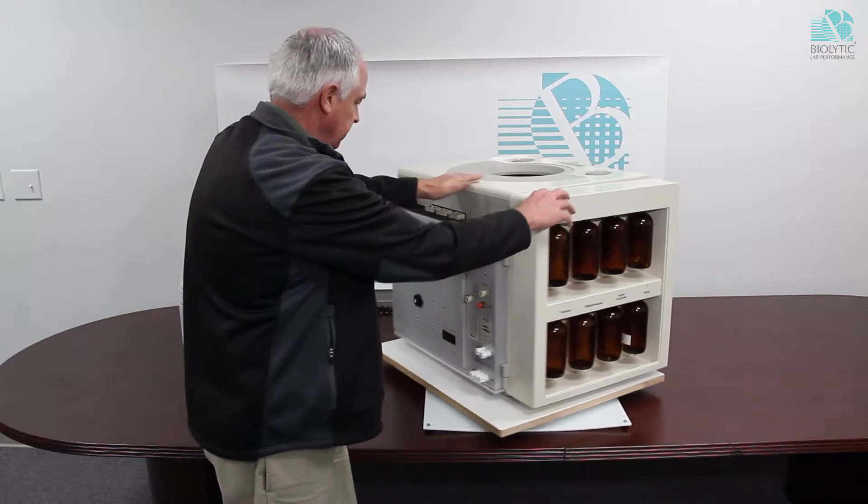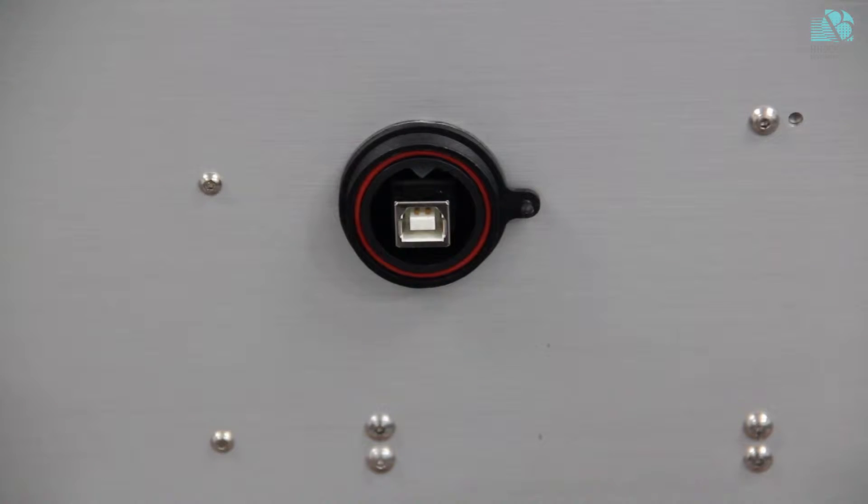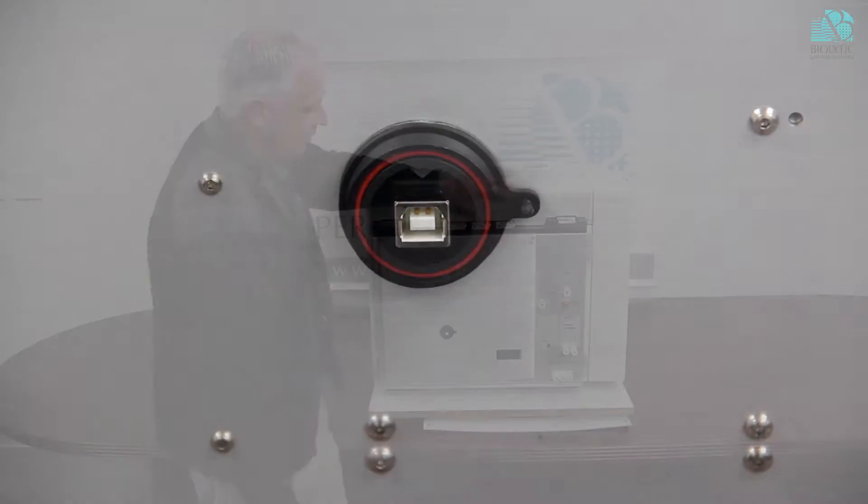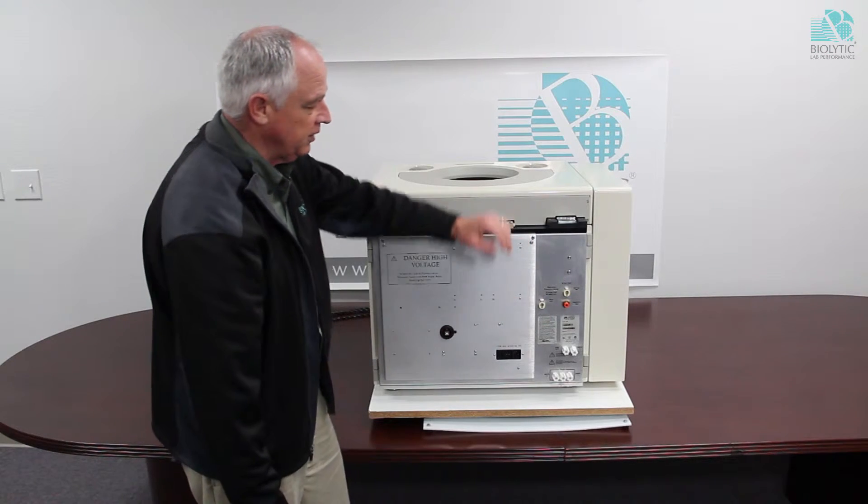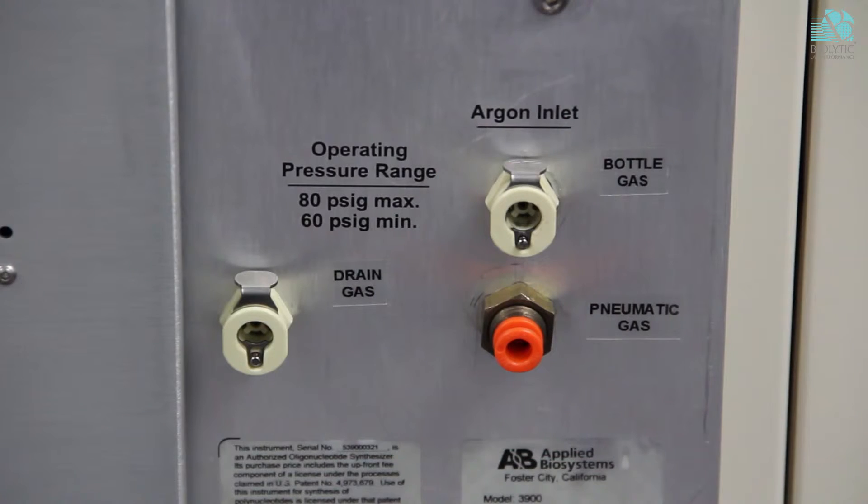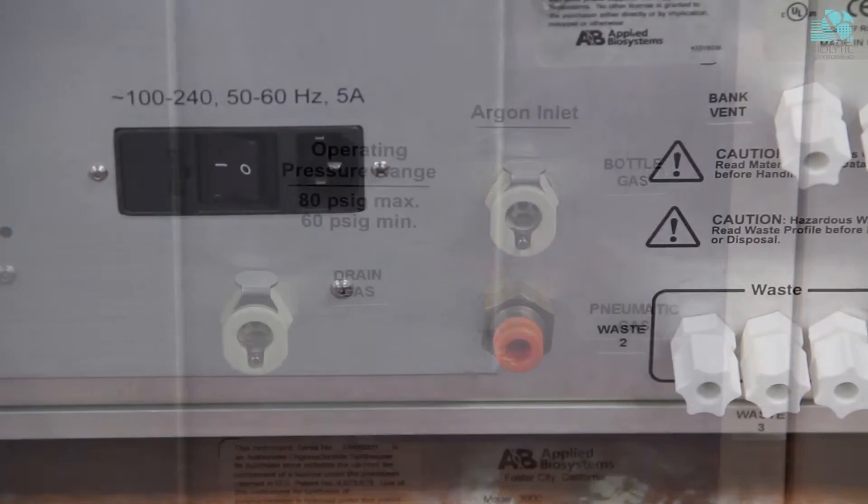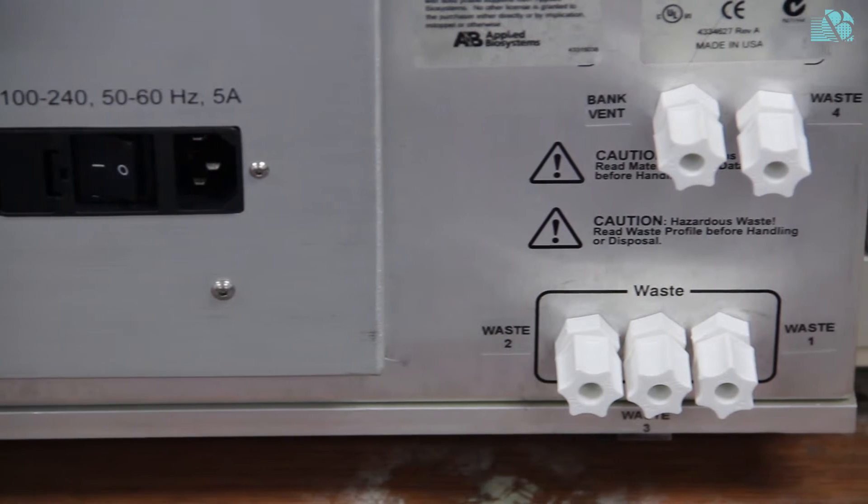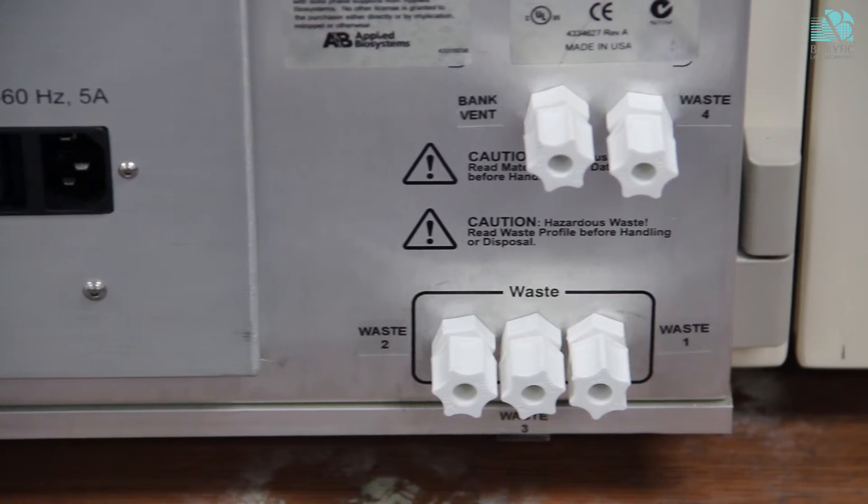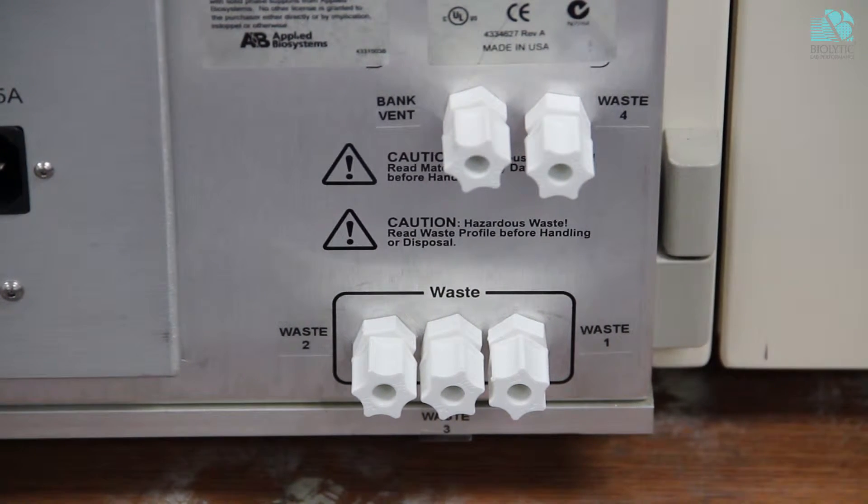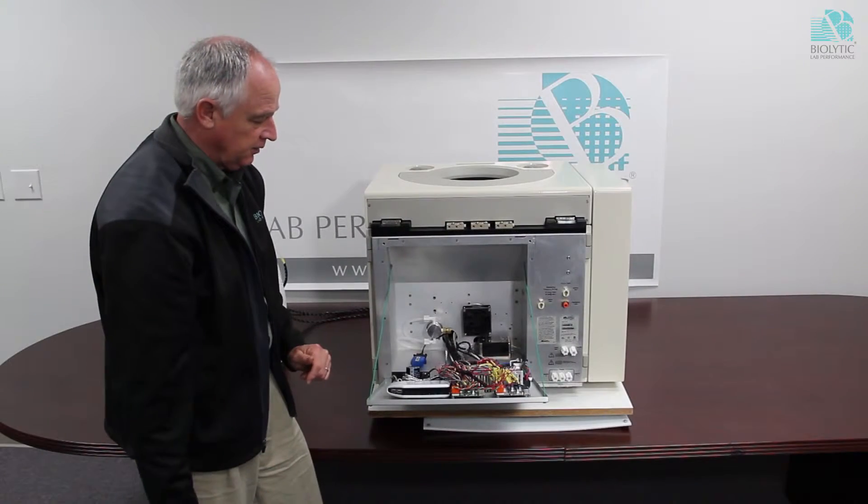On the back of the instrument you can see there's one connection here for USB. We provide the ability to have three different types of gas. One is for pneumatics, the other is the bottle pressure and then there is the drain gas. Down here we have our four exit ports for waste and one for vent. So this is the new rear panel that we install.